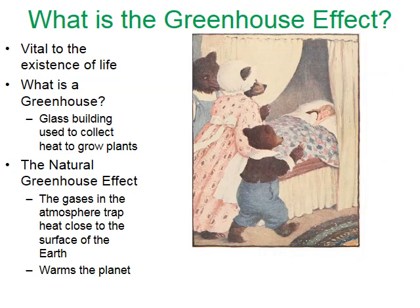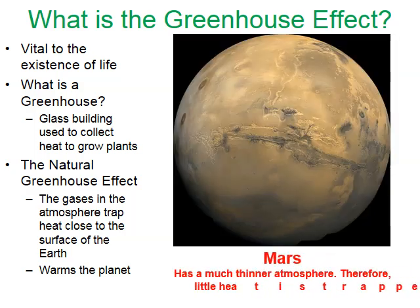The greenhouse effect reminds me of Goldilocks and the Three Bears. One of the porridges she ate was too cold. There's a planet in our solar system that's too cold for life as we know it because it doesn't have a greenhouse effect — Mars. Mars has a very thin atmosphere, very little heat is trapped, and for the most part it's a frozen planet.